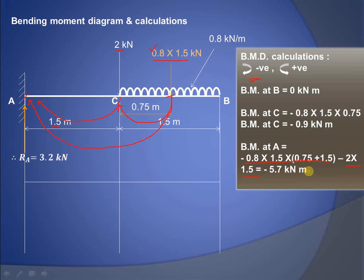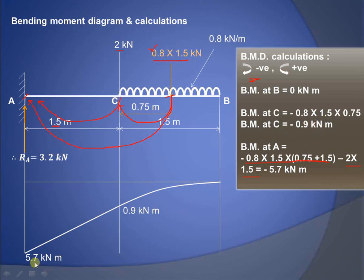Since there is a UDL from B to C, the bending moment equation is second order, so the diagram shows a parabola from B to C, then an inclined straight line from C to A. The values are −0.9 kNm at C and −5.7 kNm at A, and as these values are negative the diagram is drawn below the reference baseline. This completes the shear force and bending moment diagram for a cantilever beam carrying UDL and a point load.